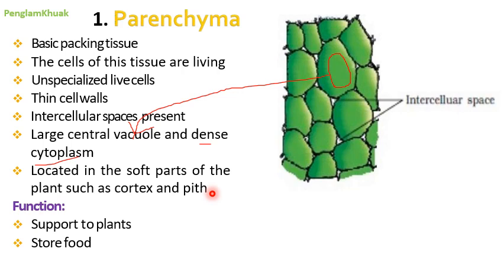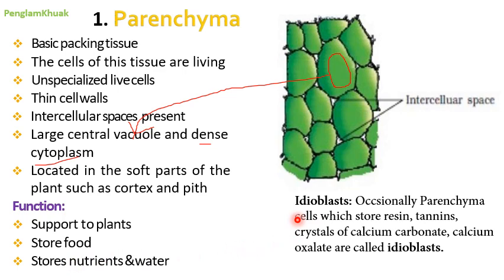The functions of parenchyma include: providing support to plants, storing food, manufacturing food through photosynthesis (producing glucose), and storing nutrients and water. Idioblast is another term — parenchyma cells that occasionally store resins, tannins, crystals of calcium carbonate, and calcium oxalate within the cells are called idioblasts.